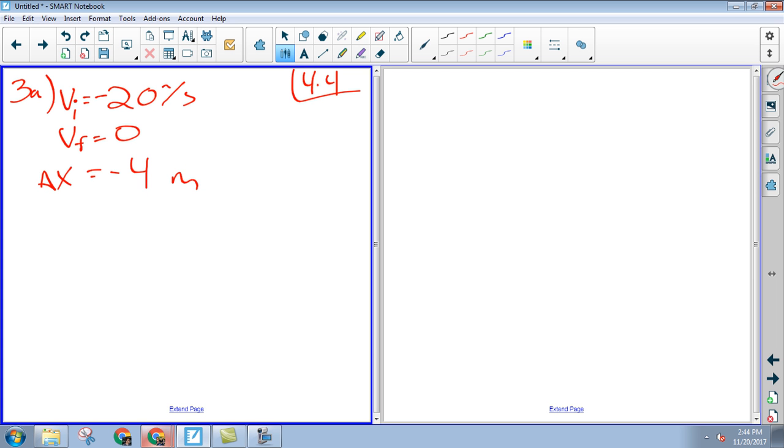Why did I give you all this stuff? Find the acceleration, right? So 2 times A times negative 4 equals 0 squared minus negative 20 squared. Solve for your acceleration and you get positive 50 meters per second squared.